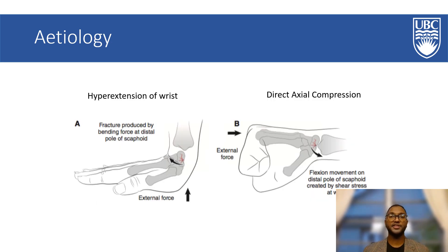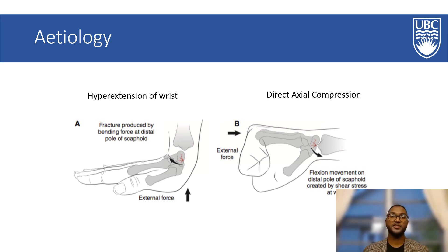Two external forces underlie the mechanism of scaphoid fracture. First, let's examine the rotational force. This force is usually produced by a hyperextension of the wrist. A common patient story includes a fall on an outstretched hand, which we aptly shorten to the acronym FOOSH. These falls occur during various activities such as skateboarding, skiing or snowboarding. The second force that leads to scaphoid fracture is direct axial compression, which usually occurs when a patient has punched an immovable object.